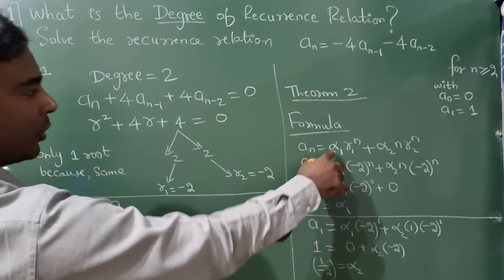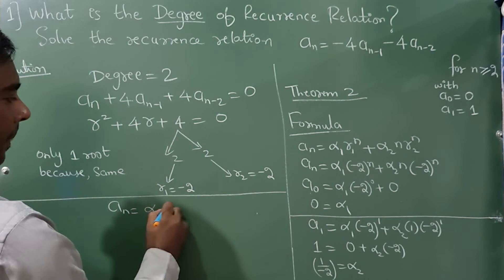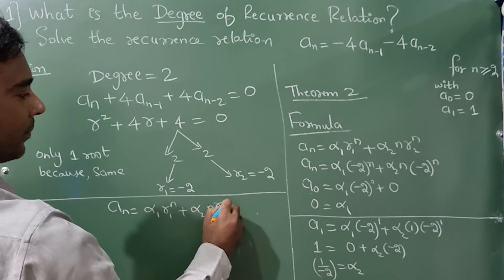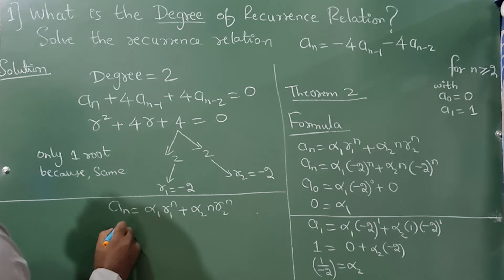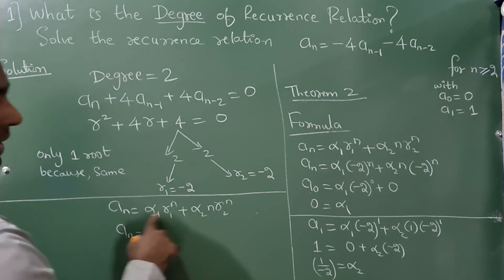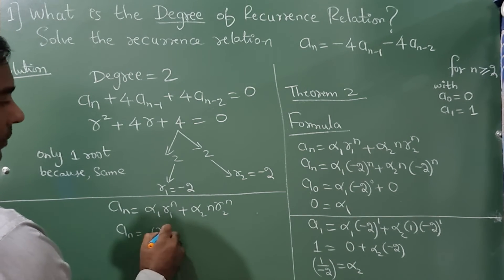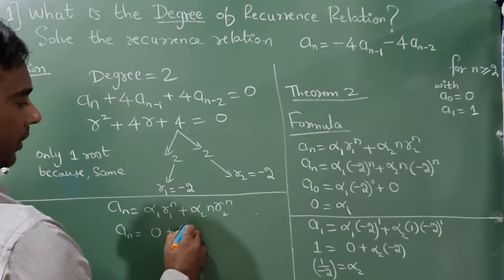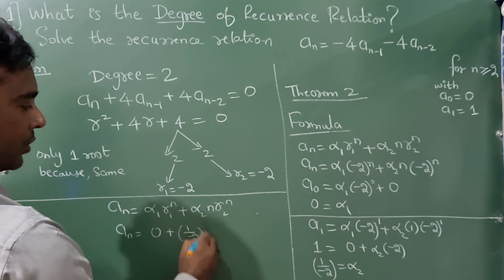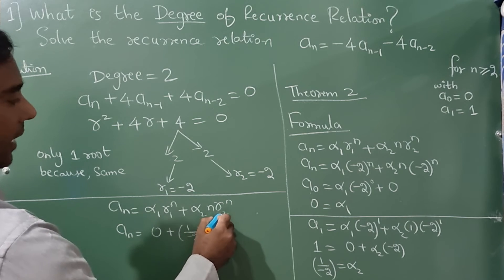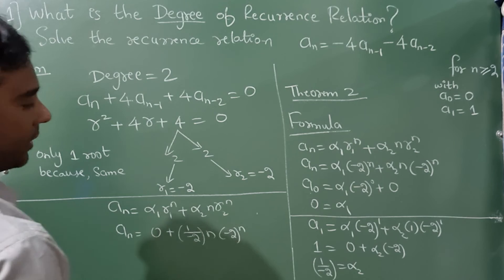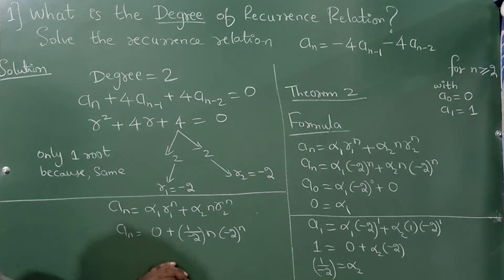So this is the formula: a_n = what is α₁? It is 0 plus α₂ is 1 upon -2, n and r₂ value is -2 raised to n. So this completes your answer.